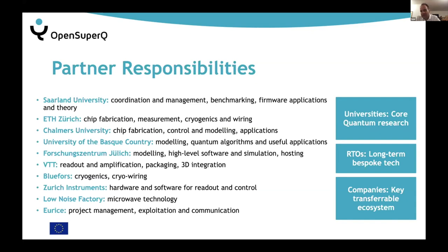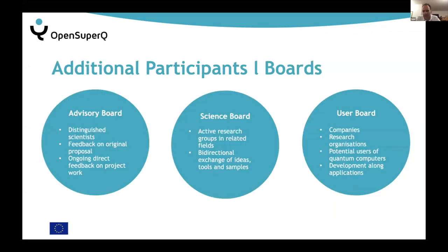The research and technology organizations handle engineering that is rather specific to this platform but not easy to commercialize, like hosting the final results, amplification, packaging, and 3D integration — tasks that require training beyond the lifetime of a typical graduate student. We also engage the wider community through an advisory board, a science board, and a user board. The science board members are academics who want to benefit from transferable tools we develop, whereas the user board are companies interested in getting a first look.